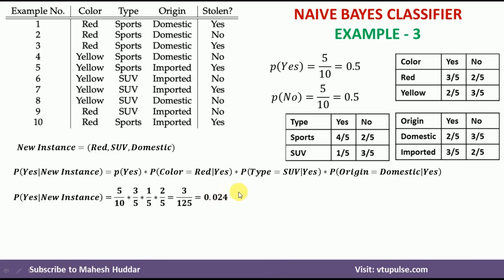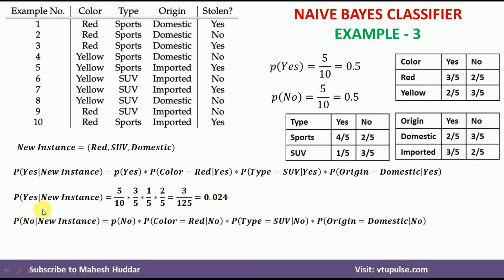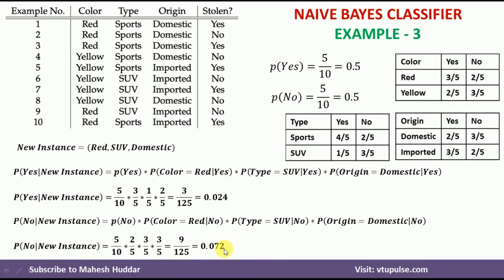Similarly, we calculate the probability of no given the new instance: P(no) × P(color=red | no) × P(type=SUV | no) × P(origin=domestic | no). Substituting all values gives a probability of 0.072. Comparing the two posterior probabilities, P(no | new instance) = 0.072 is greater than P(yes | new instance) = 0.024, so we classify the new example as no.